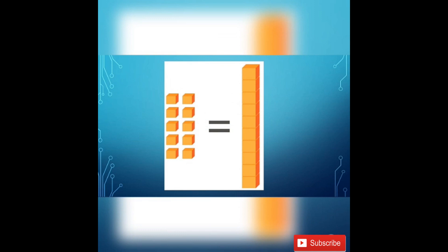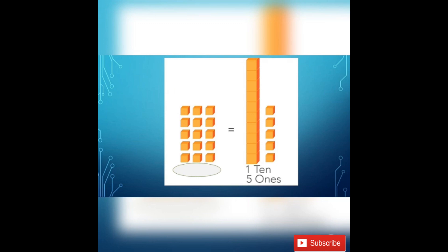Here I have cubes. Let's count: 1, 2, 3, 4, 5, 6, 7, 8, 9, 10. That makes 1 ten. Counting more cubes: 1, 2, 3, 4, 5, 6, 7, 8, 9, 10. Another group of 10 makes 1 ten. 10 makes 1 ten.